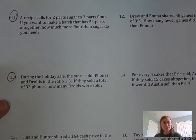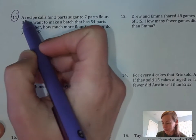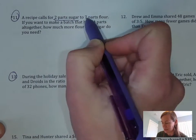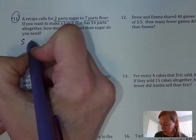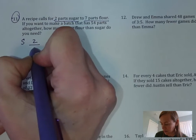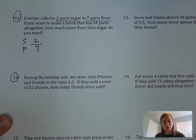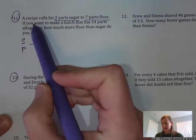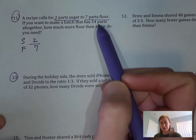Let's get started with problem number 11. A recipe calls for 2 parts sugar to 7 parts flour. I'm going to go ahead and make some notes about that. We've got sugar, 2 parts sugar to 7 parts flour. Sugar on top, flour on bottom, just to keep that organized there.